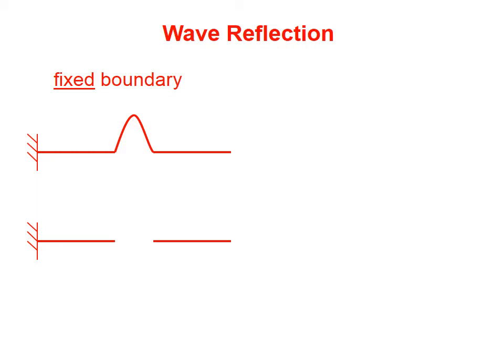We're going to consider two types of boundaries in dealing with wave reflection. The first is a fixed boundary. This drawing on the left here shows a wall, and we've attached a rope to it, and we've given a pulse to that rope.